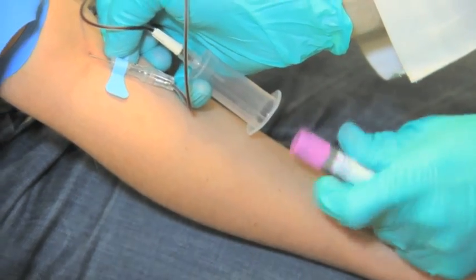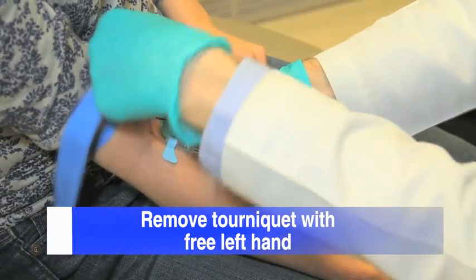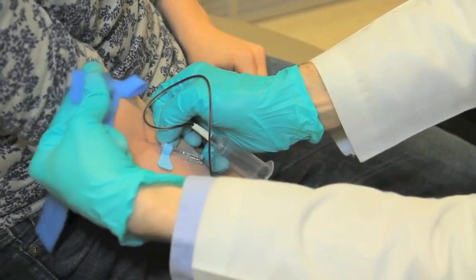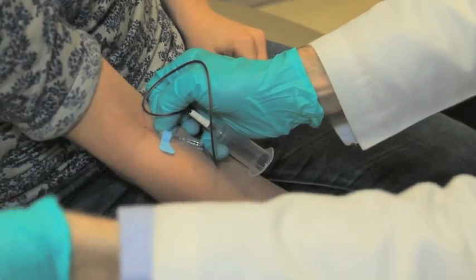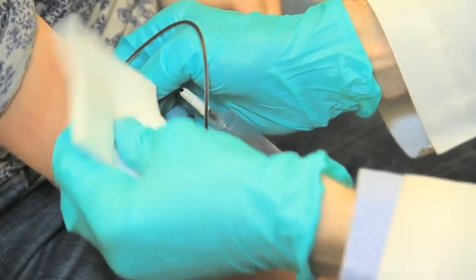When you have finished collecting your specimens and are ready to withdraw the needle, release the tourniquet by pulling the end of the loop superiorly. If it was properly tied, the tourniquet should come off easily. If you remove the needle prior to releasing the tourniquet, blood can splash at you since it is under pressure.